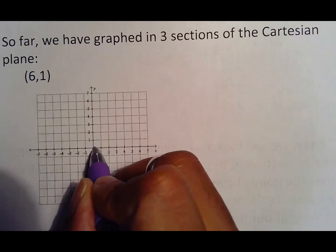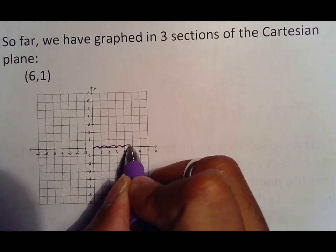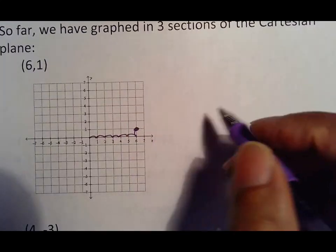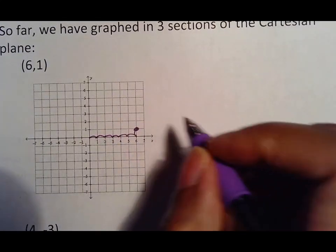For (6,1) we learned to go 6, which is 6 forward - 1, 2, 3, 4, 5, 6 - and 1 up. Again that puts us in the upper right portion of this which we call quadrant 1.